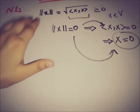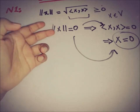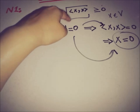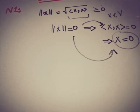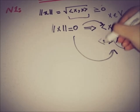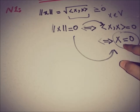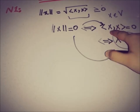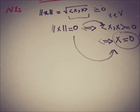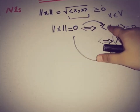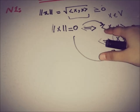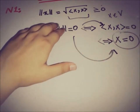Precisely, if for any x the norm is equal to zero, then by this relationship the inner product is also equal to zero, and by the inner product properties we extract that the element is zero itself. This is also true going backward: if the element is zero, this implies the inner product of the element with itself is zero. So the inner product satisfies the first property of being a norm.